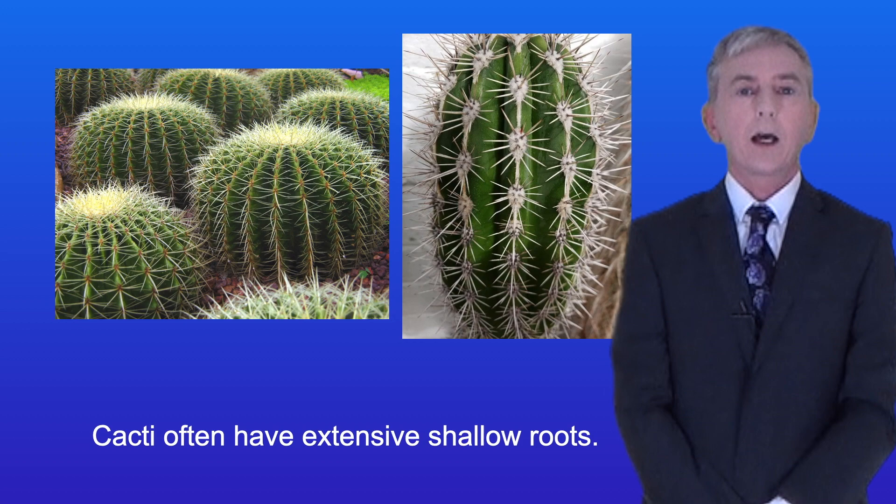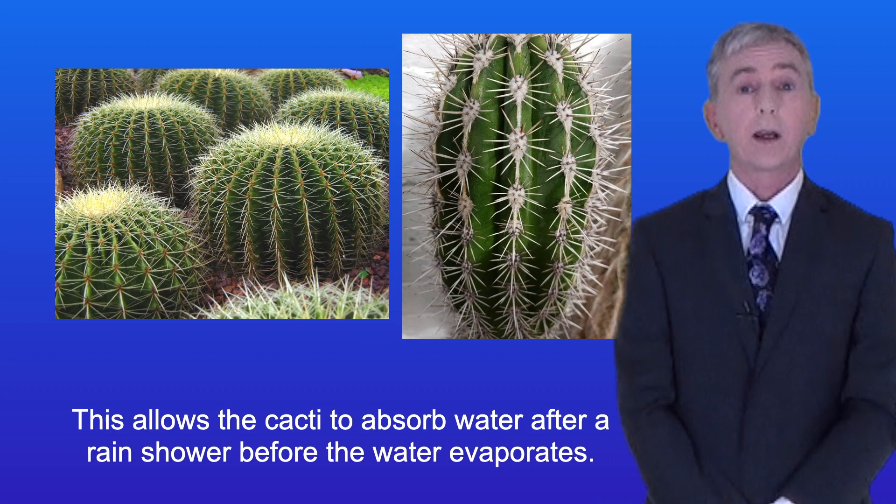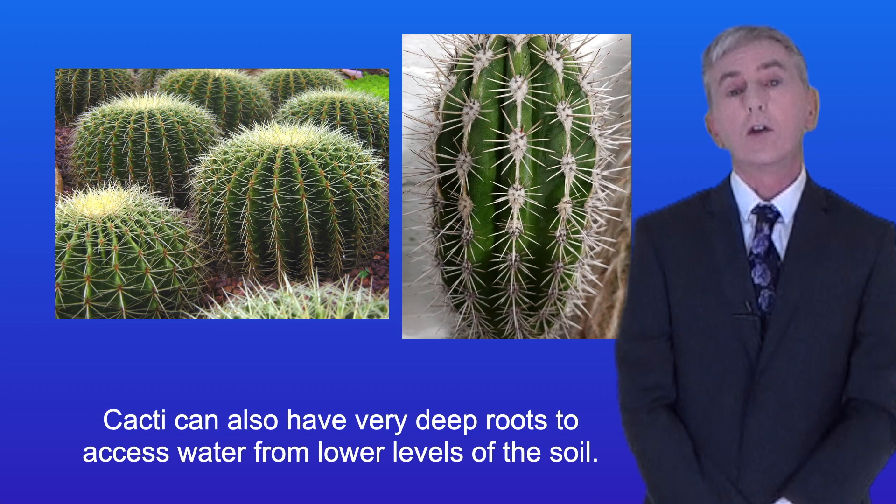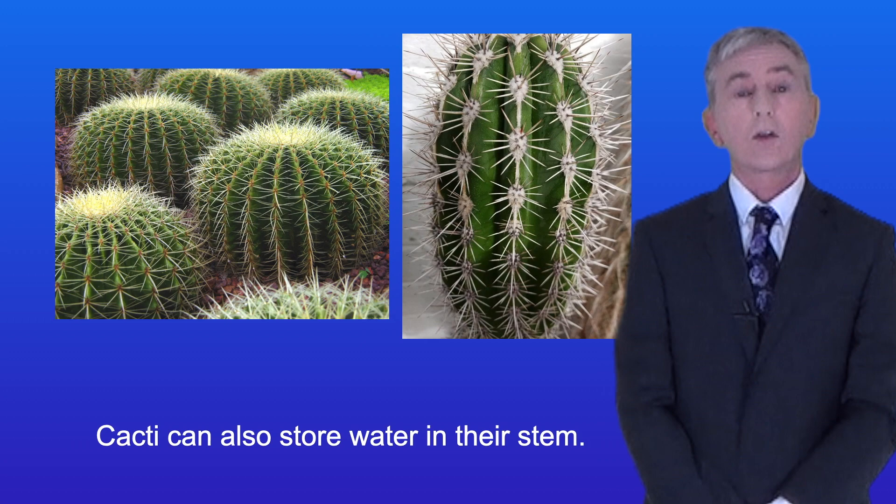Cacti often have extensive shallow roots, which allows them to absorb water after a rain shower before it evaporates. Cacti can also have very deep roots to access water from lower levels of the soil. And finally, cacti can store water in their stem. Plants which can store water like this are called succulents.